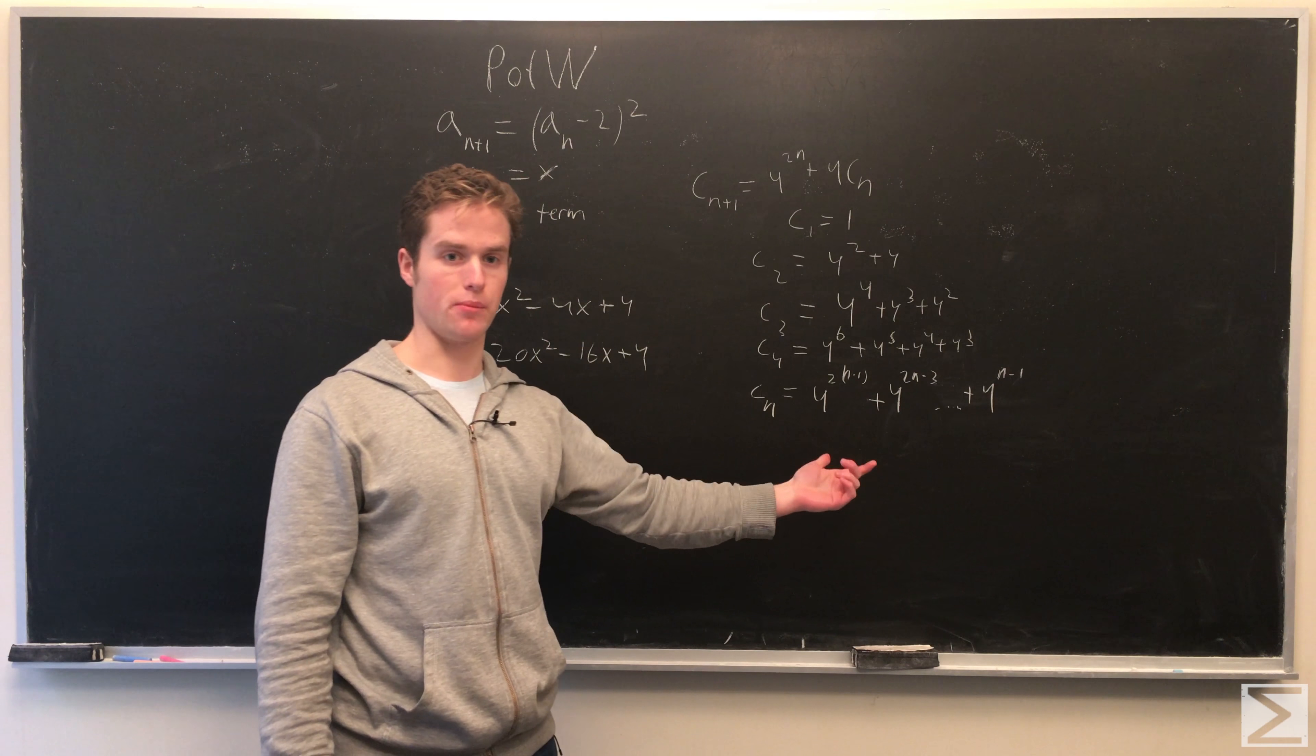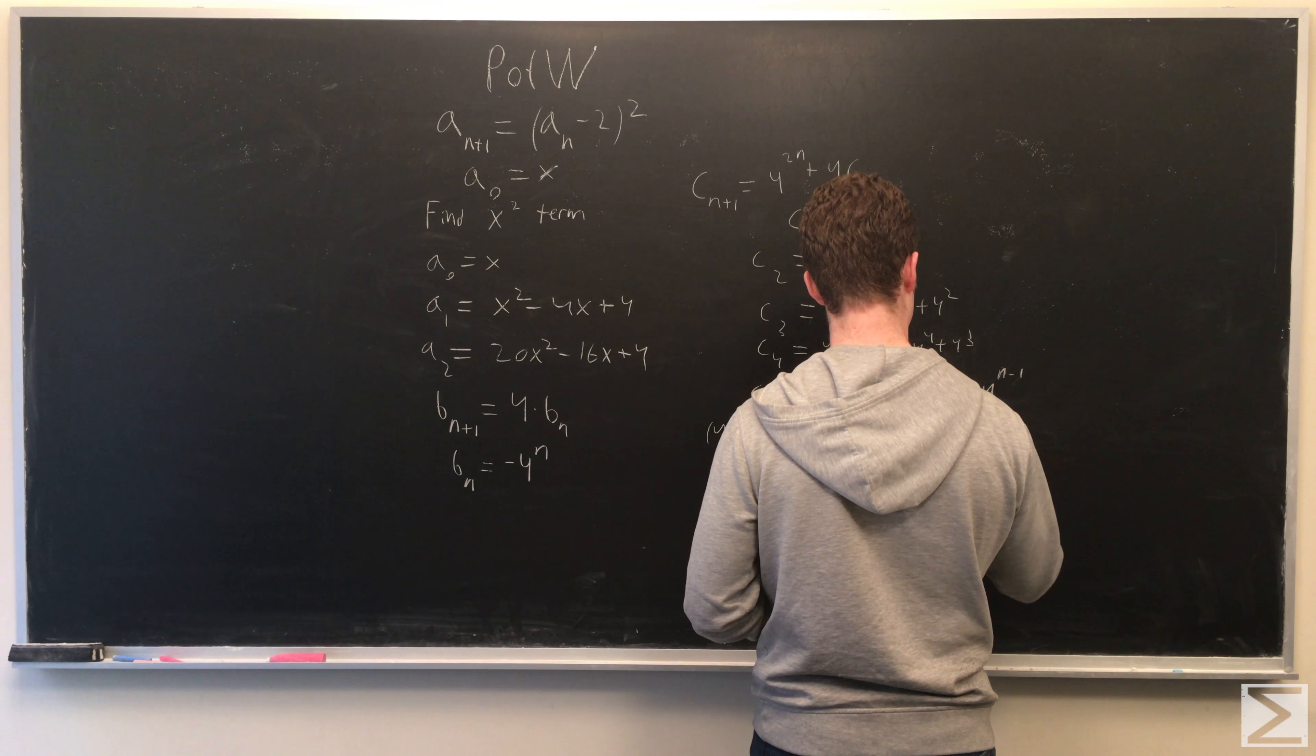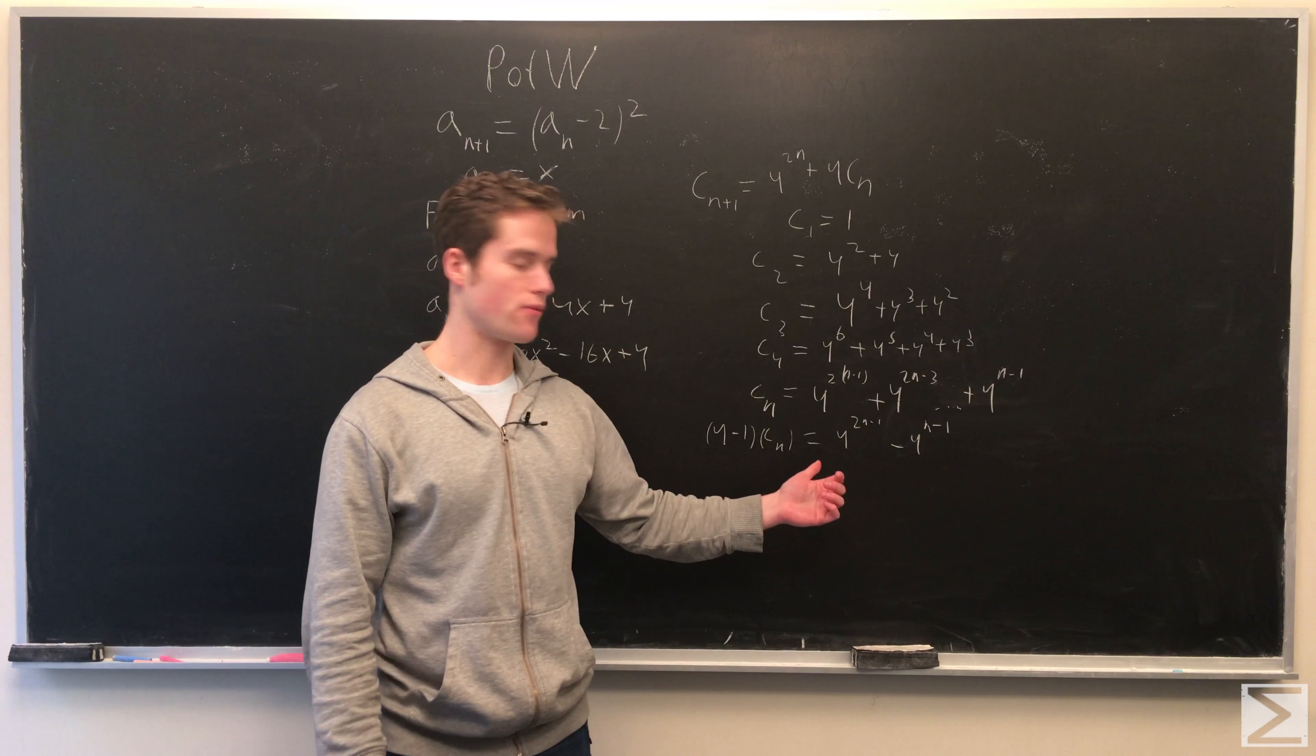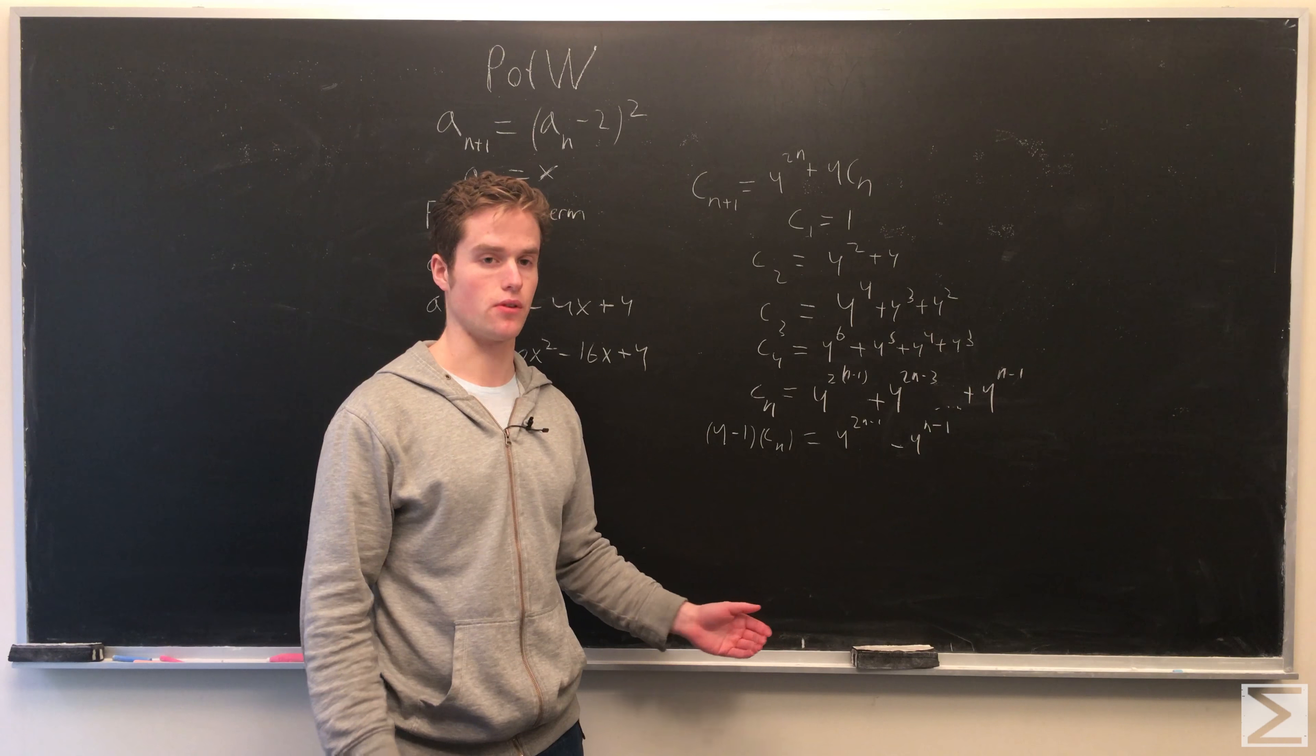we can multiply both sides by 4 minus 1. So, multiplying by 4 minus 1, this is a common strategy for simplifying geometric sequences.